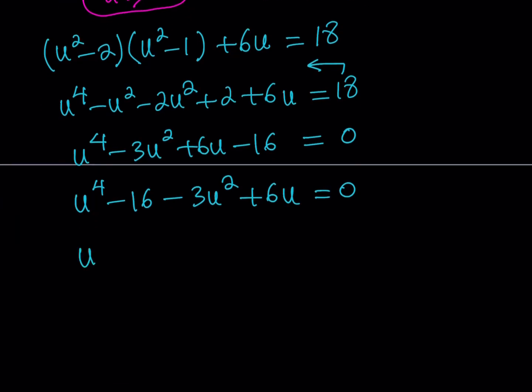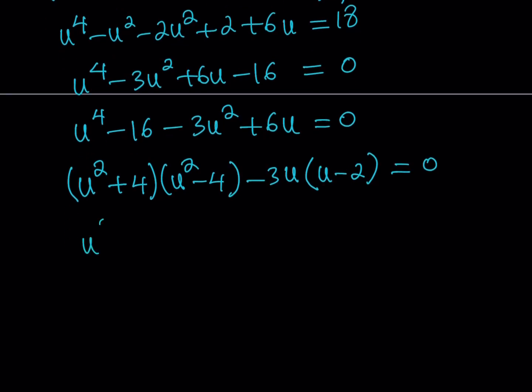So what does that look like? Well, this is, first of all, a difference of two squares. So let's go ahead and write it down that way: (u² + 4)(u² - 4). And if I can take out a -3u here, I'll be getting u - 2, which is good news because u² - 4 is divisible by u - 2. Awesome. So we're going to factor further. So let's go ahead and do this: (u² + 4) multiply by (u+2)(u-2) minus 3u multiply by (u-2). And the whole thing is equal to 0.